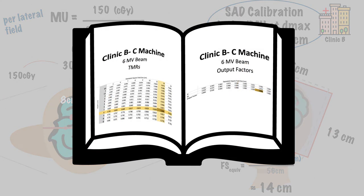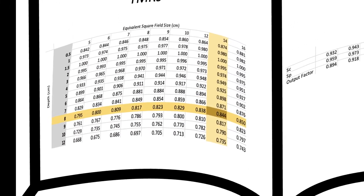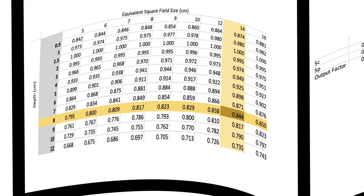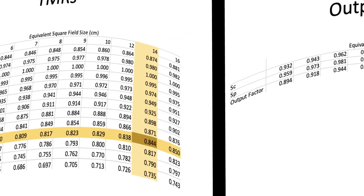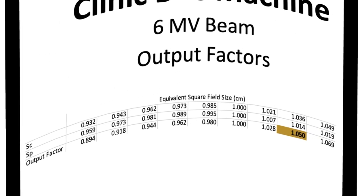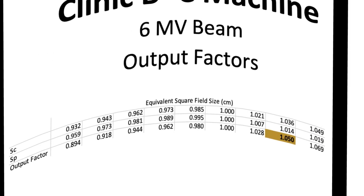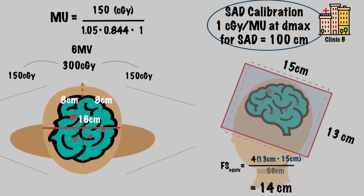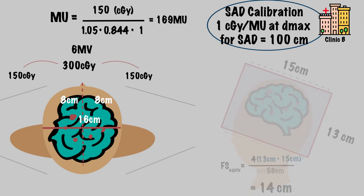For TMR, we find the cell corresponding to our depth and our equivalent square size, which is 0.844. And for the output factor, we just need to find the cell corresponding to our equivalent square field size, which is 1.05. Note that here the output factor is larger than 1 because field size is larger than 10 by 10 centimeters. Putting this all together, we have 150 centigrade divided by our output factor of 1.05 times the TMR value of 0.844, which altogether equals 169 monitor units.